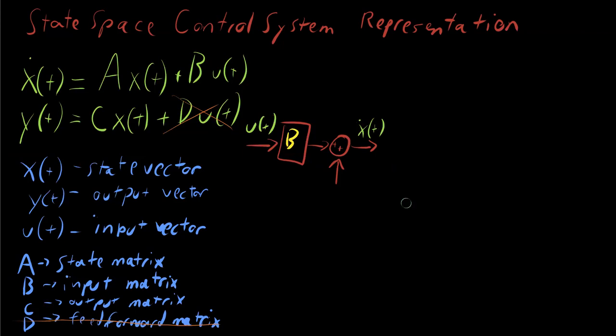So B times u of t plus A of x of t is going to equal x dot of t. I should probably do this in blue because otherwise the green and the yellow are too close to each other to see. And just for completeness sake, let's go ahead and make these the same color so we can see everything pretty cleanly.